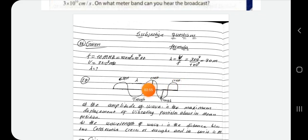First, there is a definition called transverse wavelength. The amplitude of the wave is the maximum displacement of vibrating particles about its main position. Or wavelength of a wave is the distance between two consecutive crests or troughs, and it is given in meters.